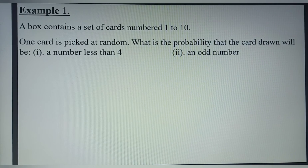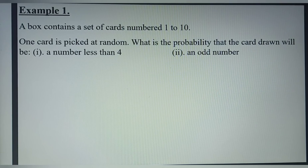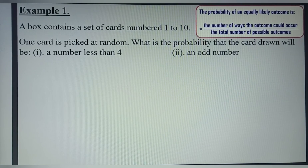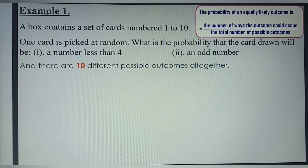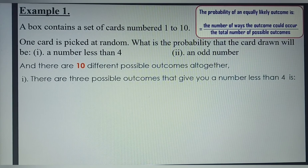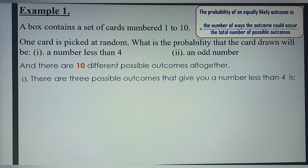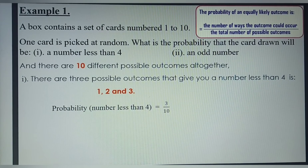Example 1. A box contains a set of cards numbered 1 to 10. One card is picked at random. What is the probability that a card drawn will be a number less than 4? The total number of possible outcomes equals 10. The number of ways possible of getting a number less than 4 is 3, because you have numbers 1, 2, and 3 that are less than 4. So the probability is 3 divided by 10.